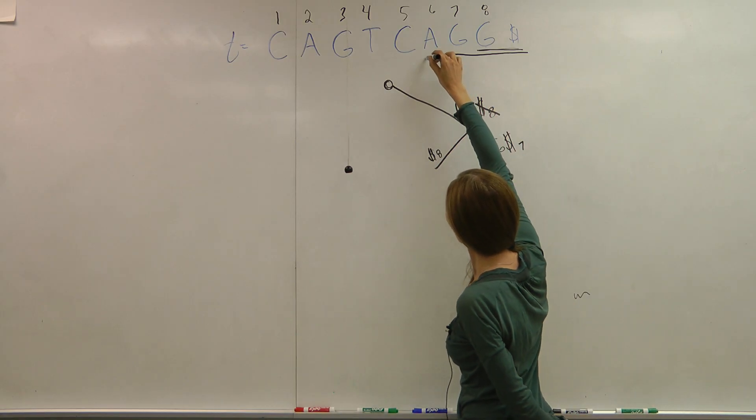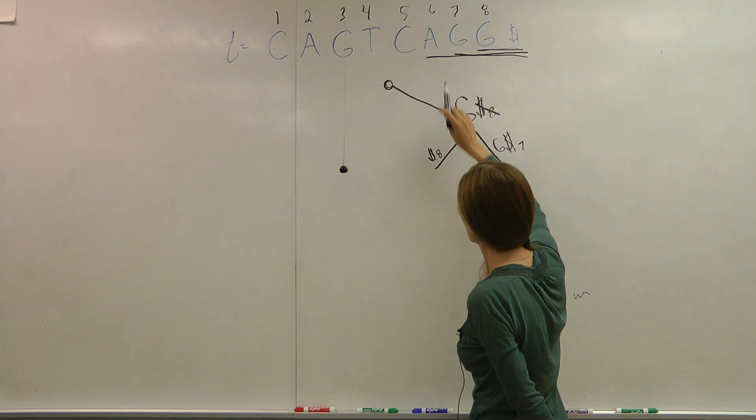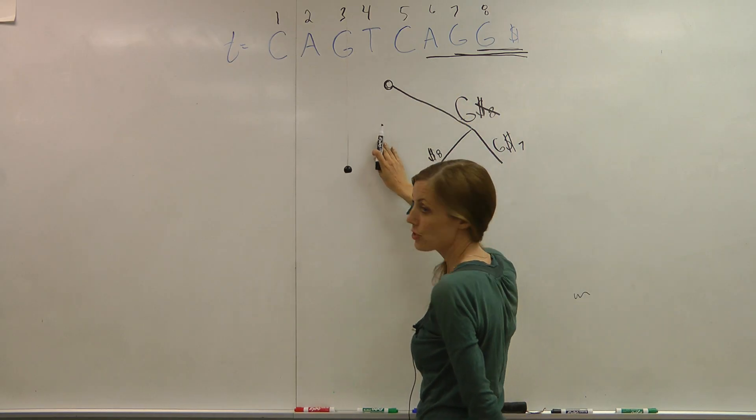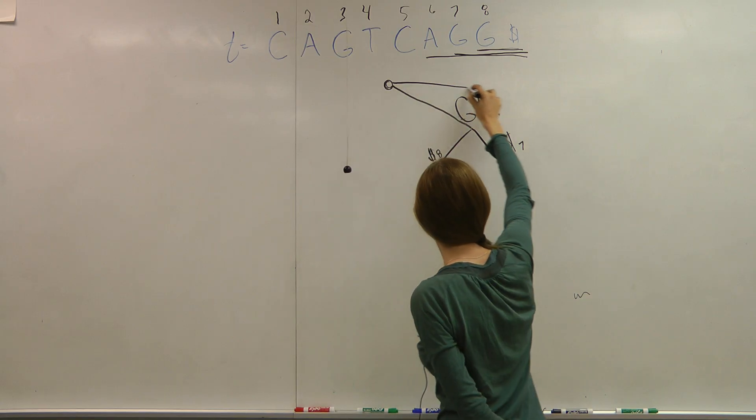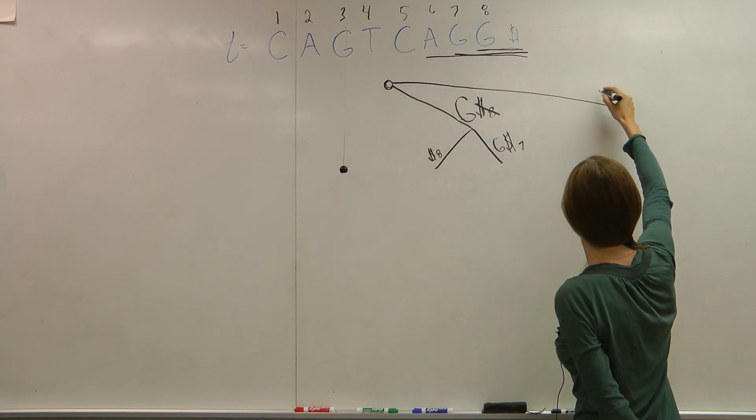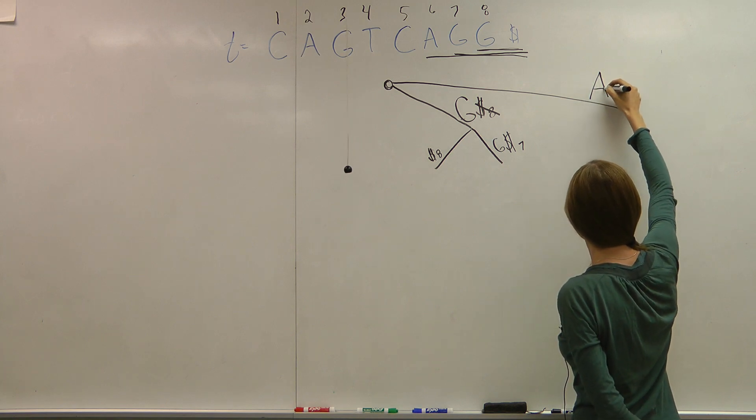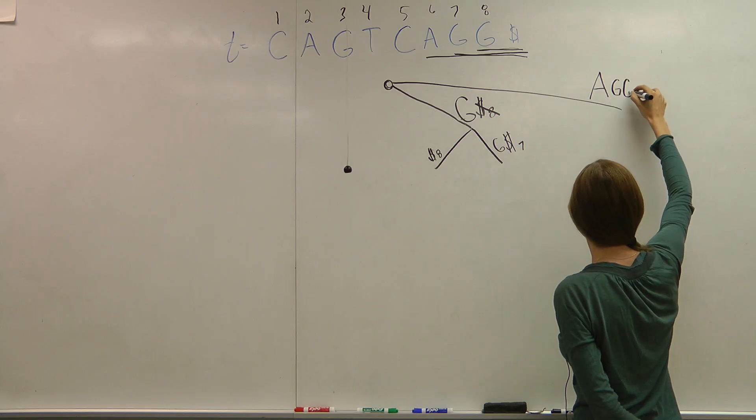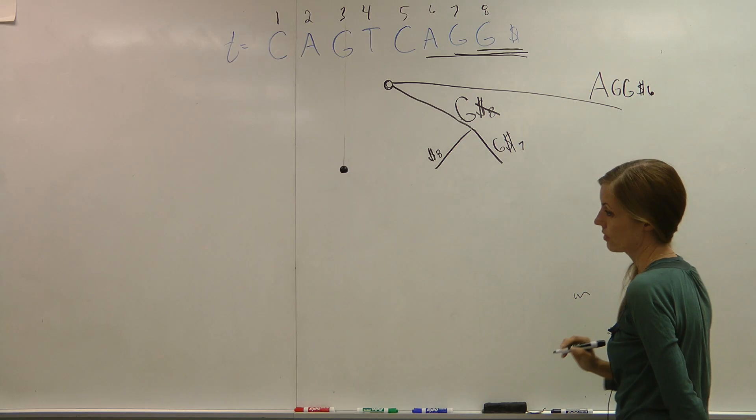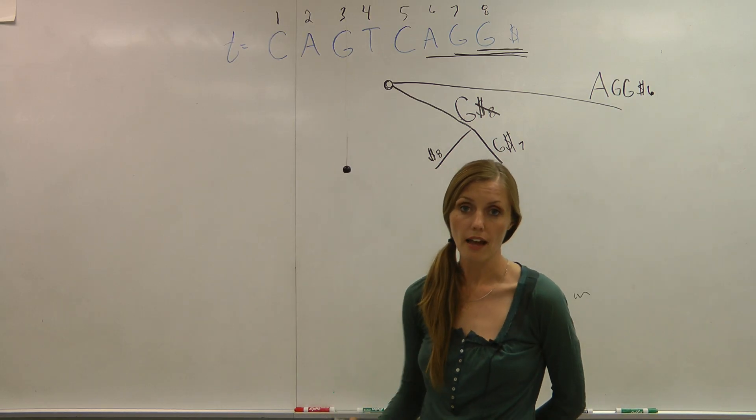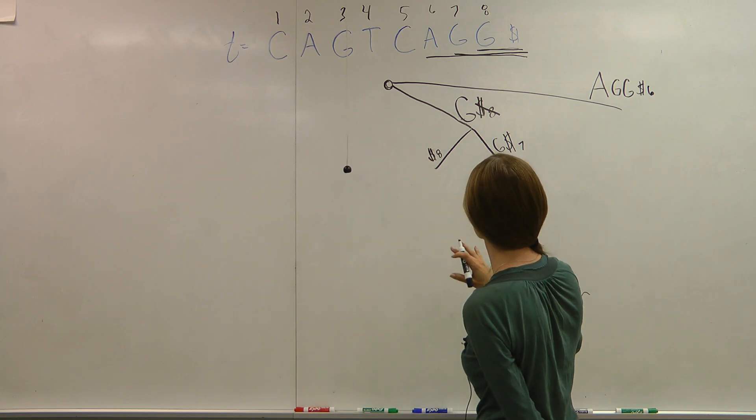Then I go to my next suffix, which is AGG. So I start by checking for A in my tree. There's no branch that represents A. So I'll go ahead and create an A branch and I'll write the whole suffix. And it starts at six. For now, I'll assume that that's going to satisfy all the suffixes within the tree.